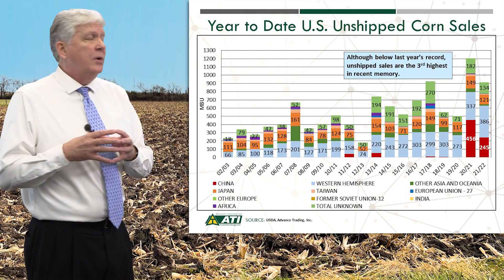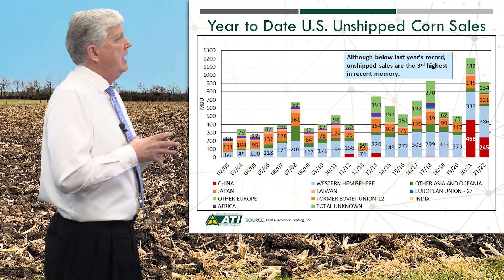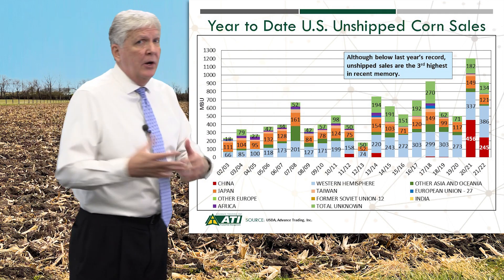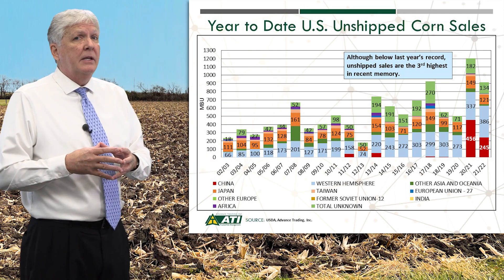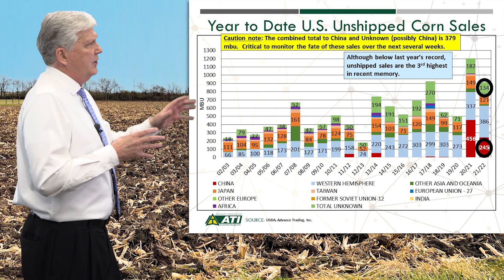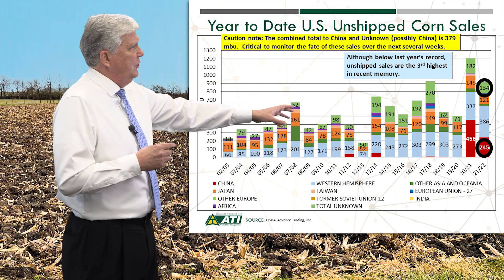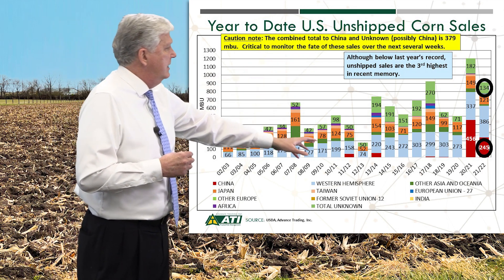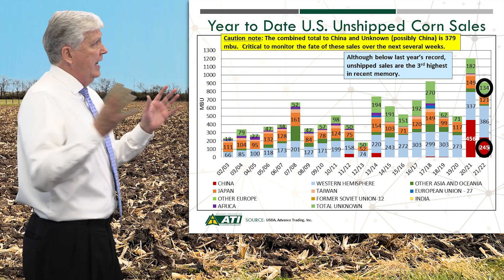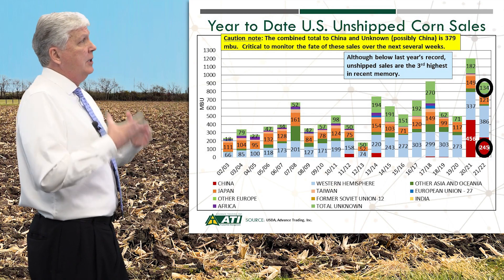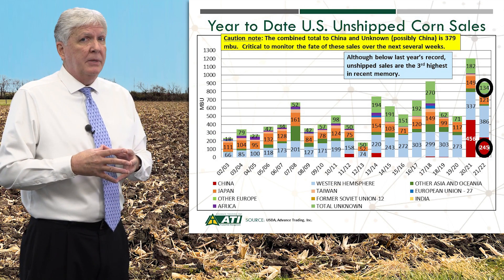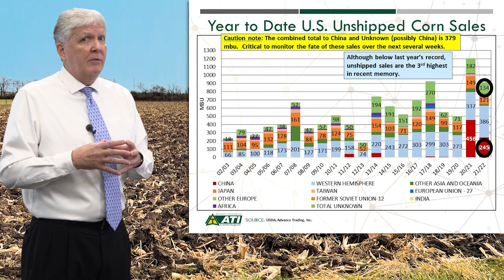We're looking at the third highest level of unshipped book of U.S. corn for this time of year ever, and that pace is actually increasing. However, there are 379 million bushels between the unknown category and what's left on the books to China. It'll be critical to monitor what happens to those bushels over the next several weeks. We could see some cancellations, we could see some of that roll to new crop, or maybe all those bushels will be shipped. It remains to be seen, but it will have a market impact.